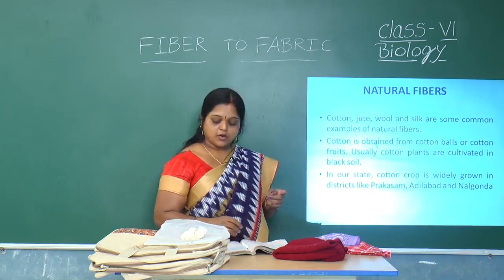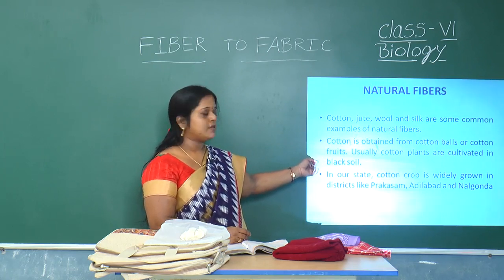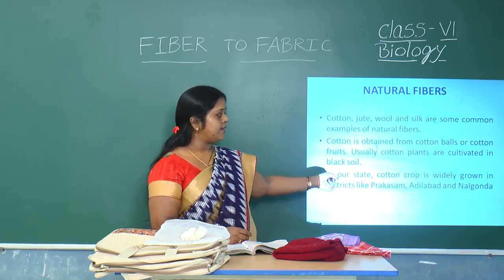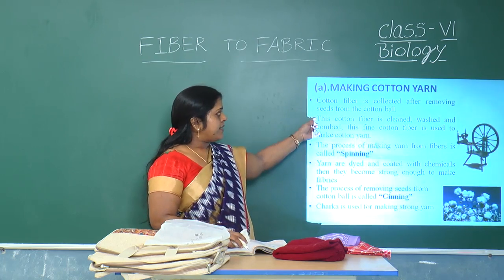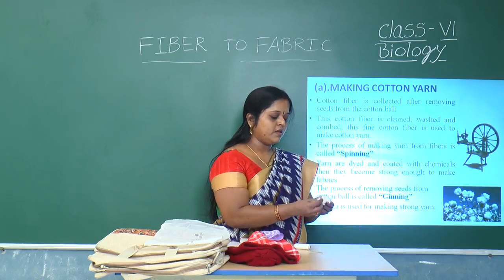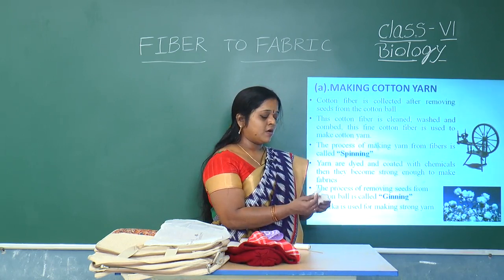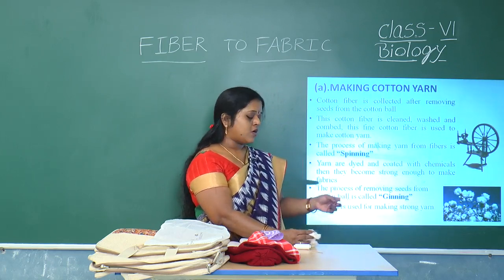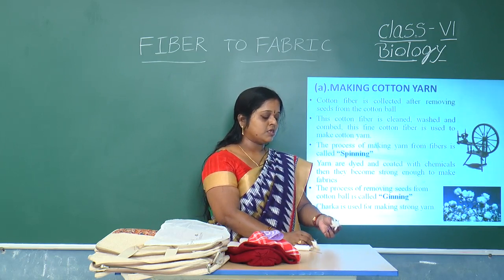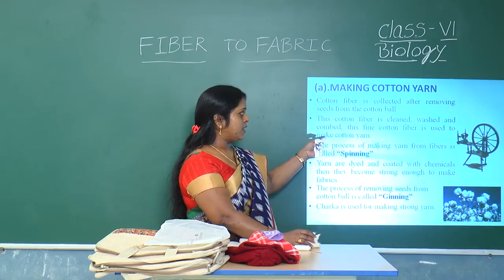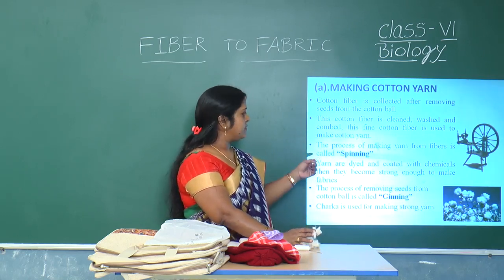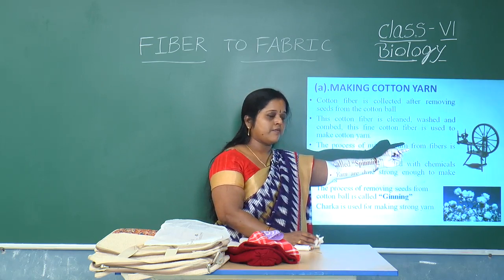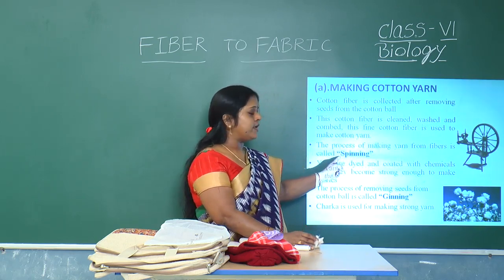Cotton is obtained from cotton balls or cotton fruits. Cotton plants are usually grown in black soil. In Telangana and Andhra Pradesh, cotton crop is widely grown in districts like Prakasham, Adilabad and Nalgonda. Cotton fiber is collected after removing the seeds from the cotton ball. This removal of seeds is called ginning. The cotton fiber obtained then has to be cleaned, washed and combed. This fine cotton fiber is used to make cotton yarn. The process of making yarn from fiber is called spinning.